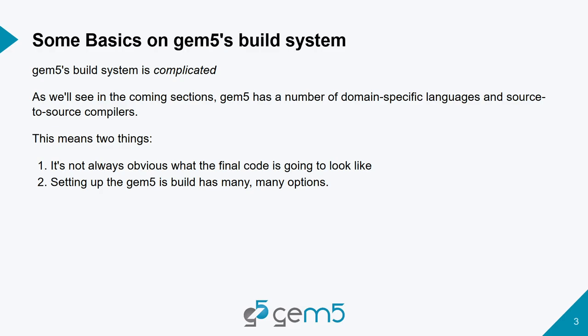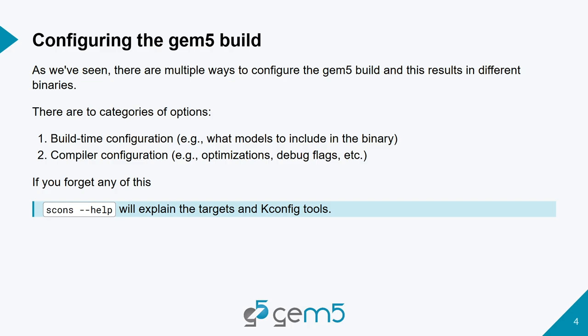GEM5 has like three domain-specific languages, one of which is for compiling GEM5. A lot of the code that gets compiled is not already there when you open up the GEM5 repository, so this requires a little bit of configuration of the compilation process. The ISA and the coherency protocol have to be specified, so GEM5 has its own build system. You can go to the GEM5 directory and run scons --help to see how to configure SCons and what GEM5 binary to produce.